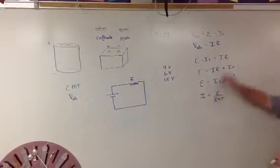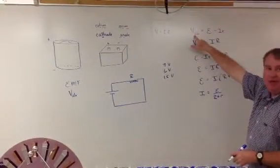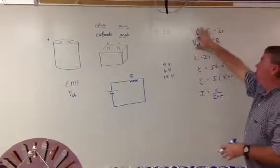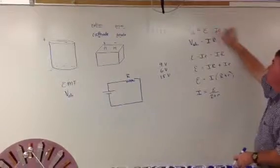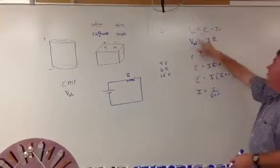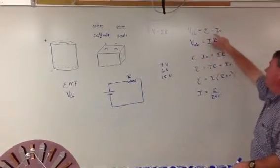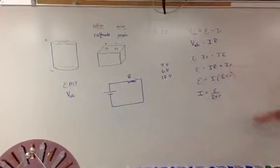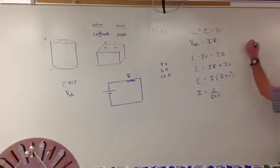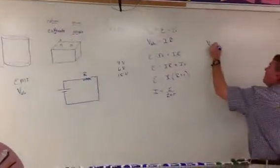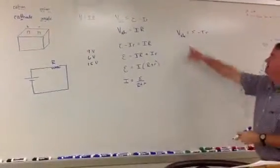Now we have current — we didn't have current before, and we needed to find VAB. We made a substitution, basically using an identity: if VAB equals this and VAB equals that, then this has to equal that — that's the transitive property. We got rid of VAB, but now we're going to plug I back into the original equation and solve for VAB. That's E minus IR, and then you can get the value for VAB.